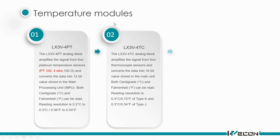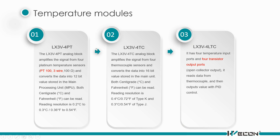For the temperature modules, we have 4PT, 4TC, and 4LTC. The 4PT must connect with a PT100 sensor — the sensor needs to be a 3-wire sensor. The 4TC works with a thermocouple. The difference between 4TC and 4LTC is that 4LTC can also output high-speed pulses, which are used for PID control.